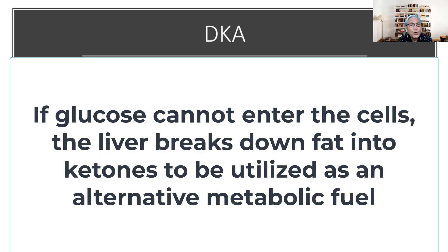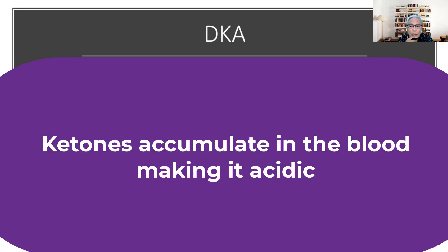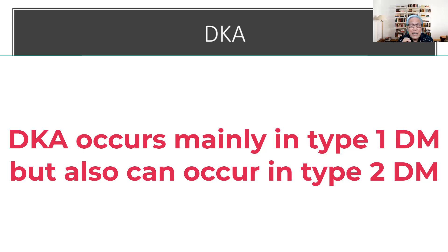The liver will rapidly break down fat into ketones to employ as a fuel source. This production of ketones will accumulate in the blood and the urine and therefore turn the blood into an acid state — becoming acidotic. This occurs mainly in patients with type 1, but is actually not uncommon in patients with type 2 as well.